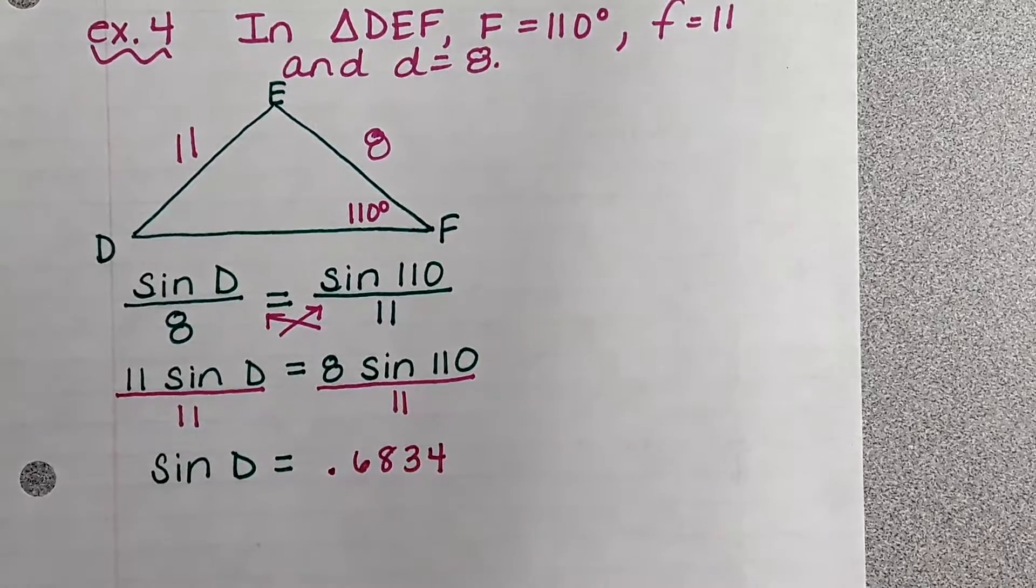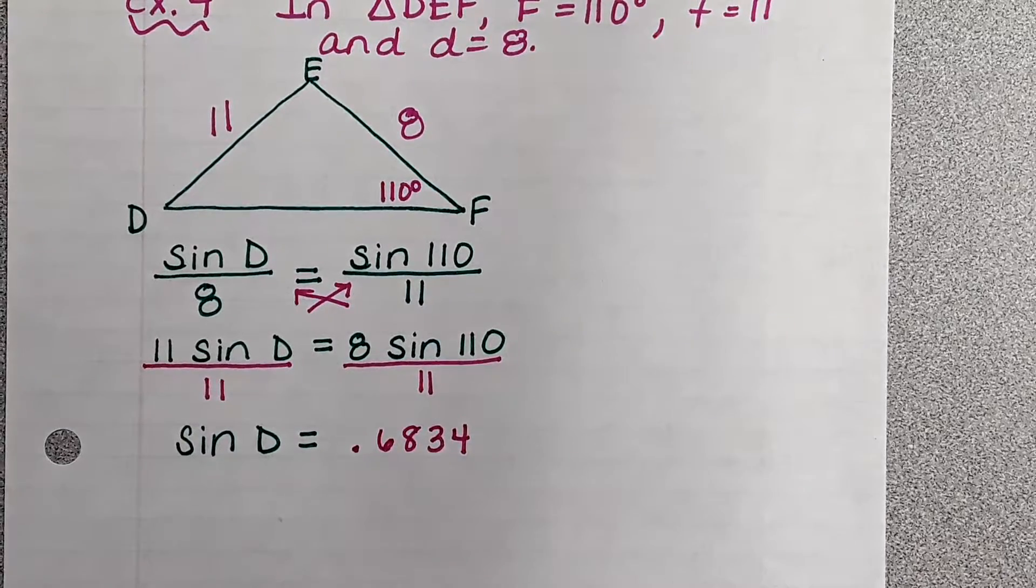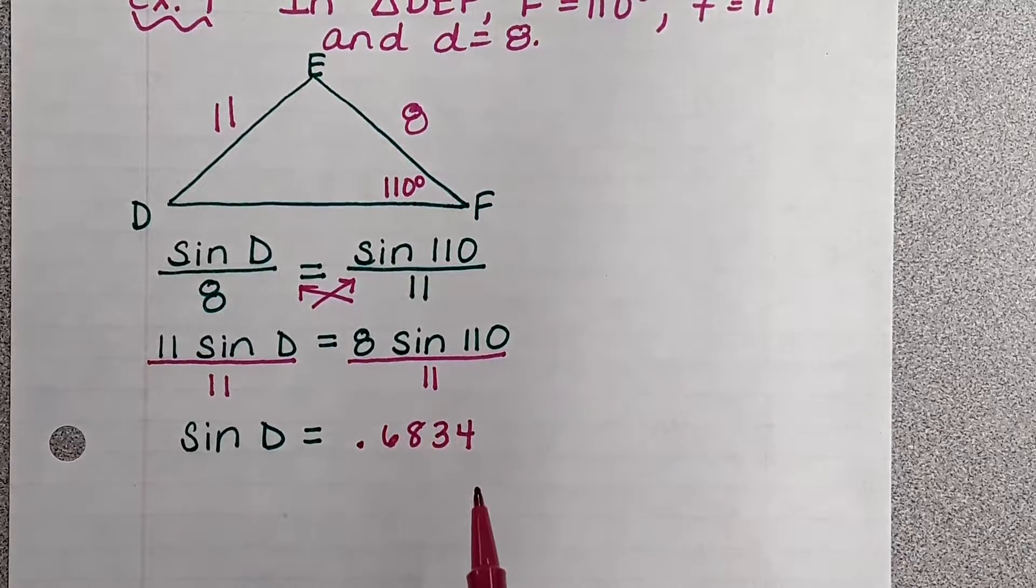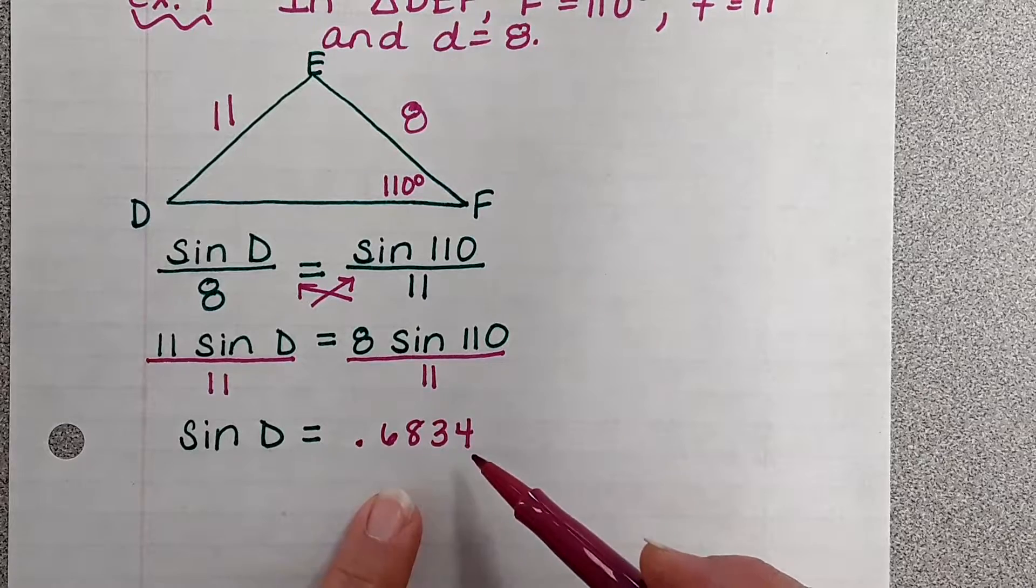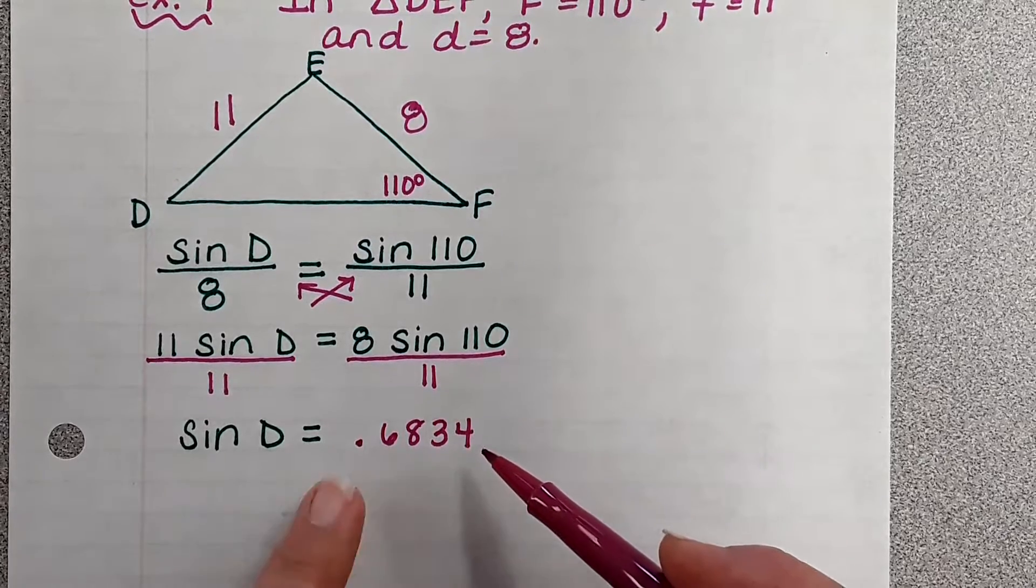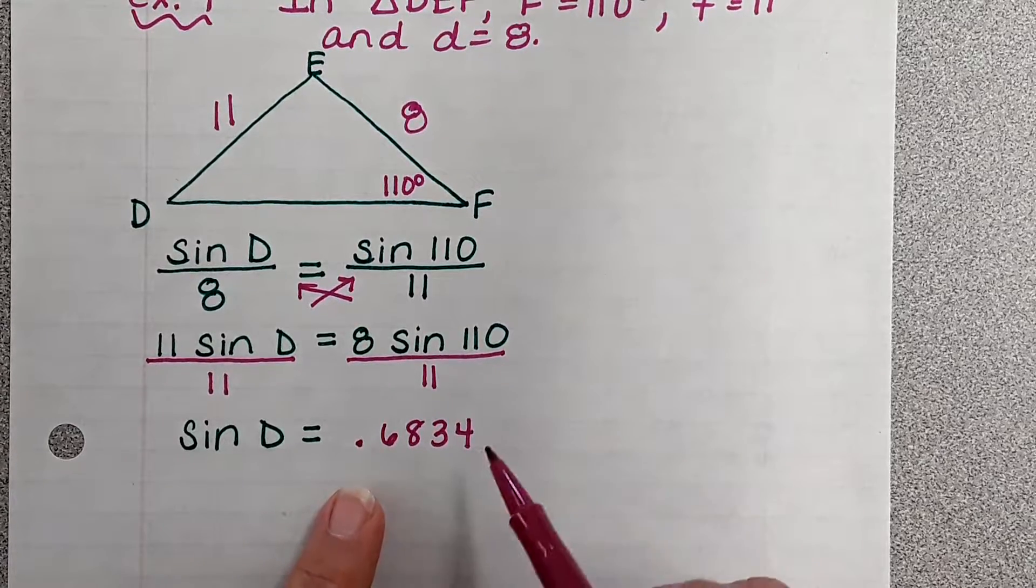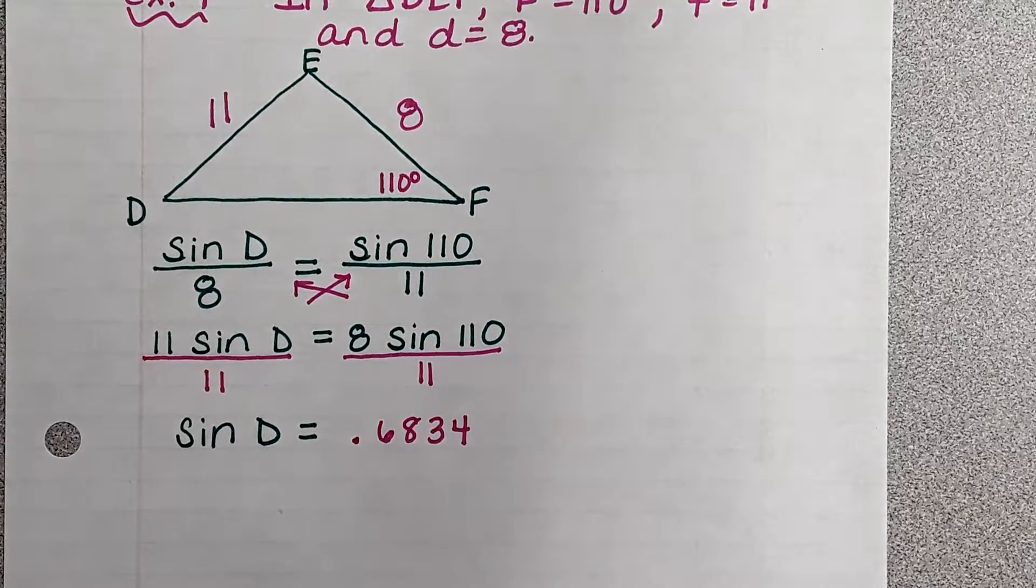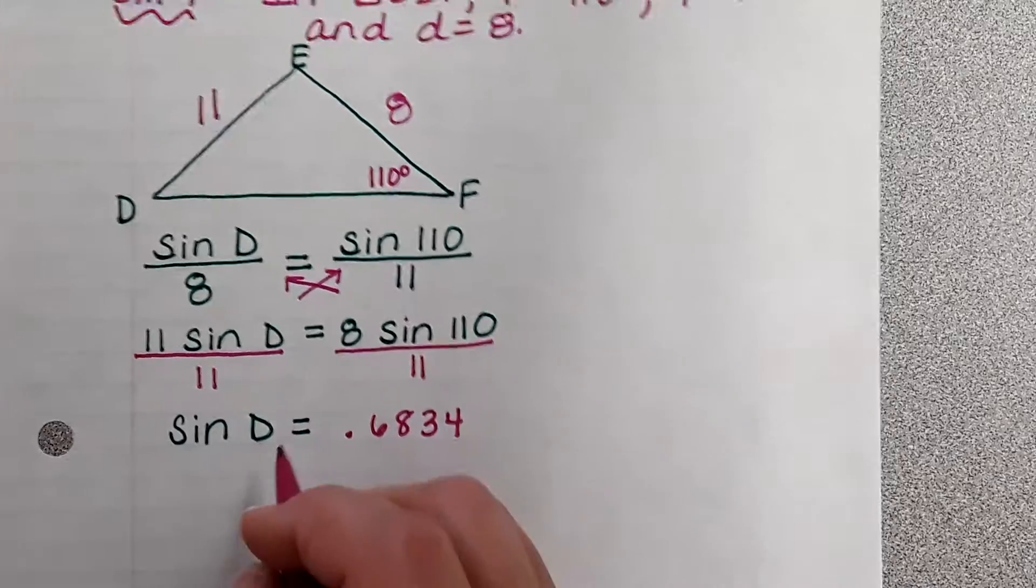But we're not done because we learned in section 12.1 that when you're looking for an angle measure and you have this ratio or fraction, what we need to do is now do second sine. Anytime you're looking for an angle measure, you're going to do second sine.